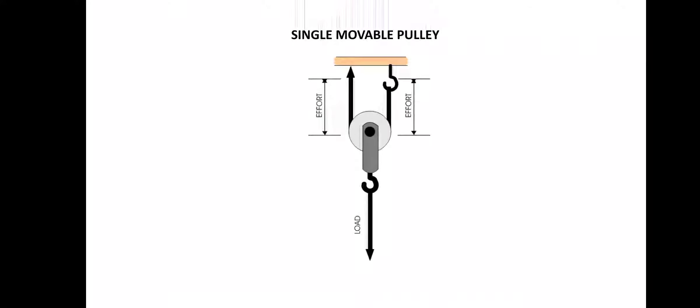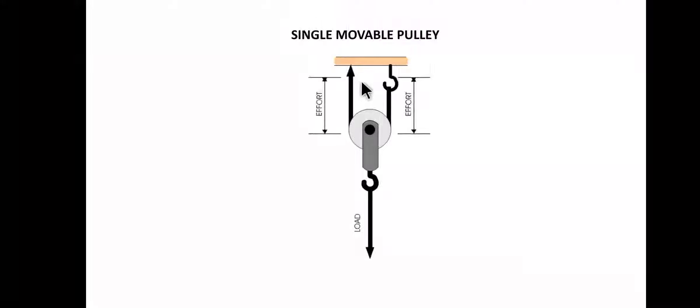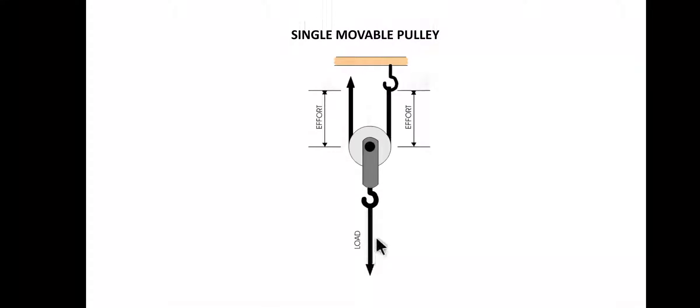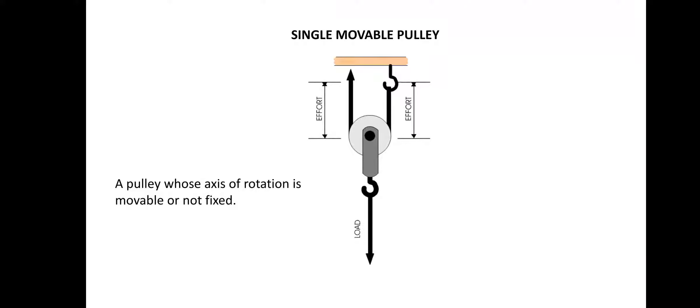The next type is the single movable pulley. A single movable pulley works such that when the effort is applied, the load gets lifted up. A single movable pulley is a pulley whose axis of rotation is movable or not fixed — the axis of rotation moves, it is not fixed.